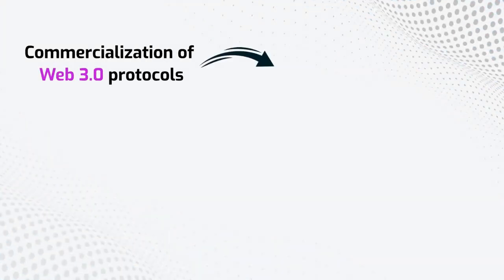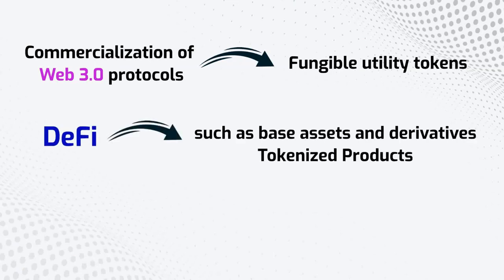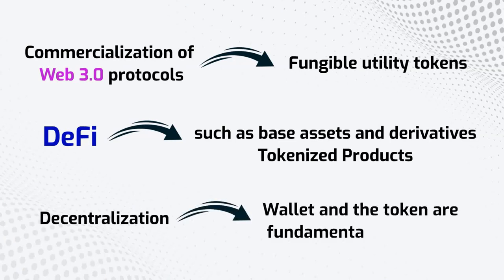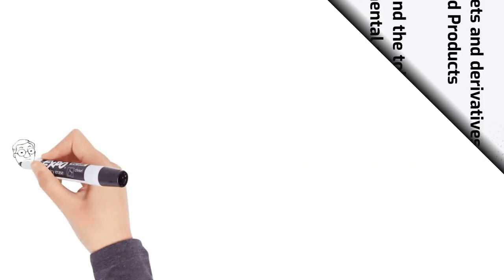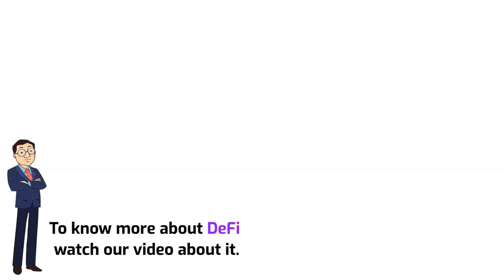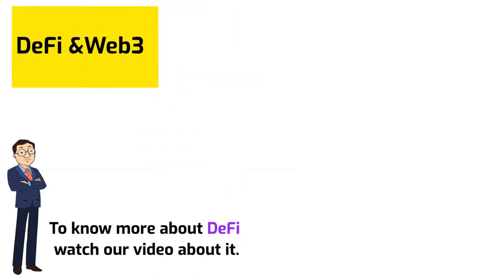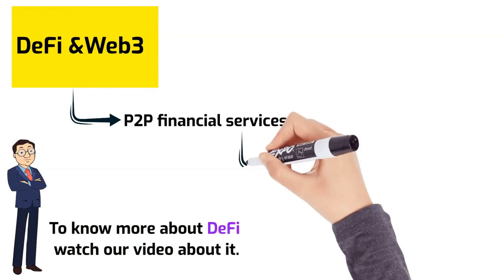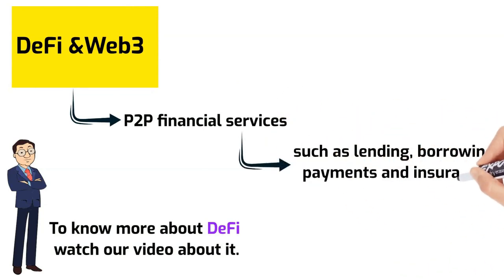Commercialization of Web 3.0 protocols, which manifest as fungible utility tokens, further blurs the lines with diverse financial innovation products introduced by DeFi — products that are also tokenized. So while decentralization is the underlying theme, and the wallet and the tokens are fundamental constructs, these blurring lines are quite profound. Both DeFi and Web 3.0 tend to completely reshape the way consumers manage their finances, holding the promise of truly peer-to-peer financial services such as lending, borrowing, payment, and insurance.